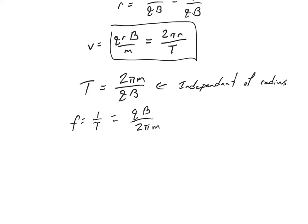Or I might want to know the angular frequency omega, which is 2 pi times the frequency. So that's just going to be the charge times the magnetic field over the mass of the particle.